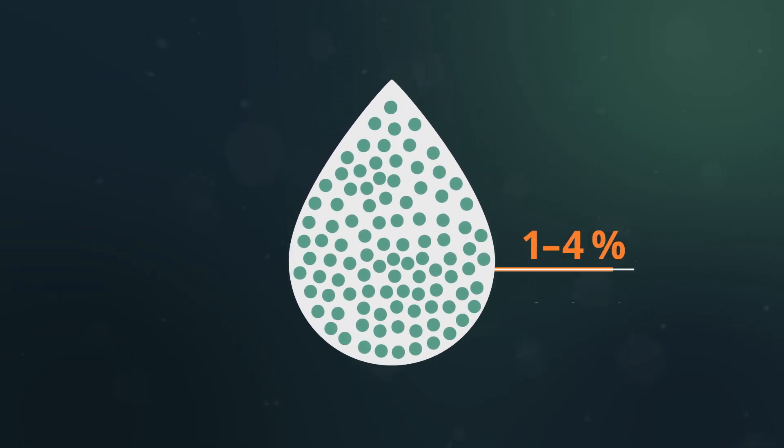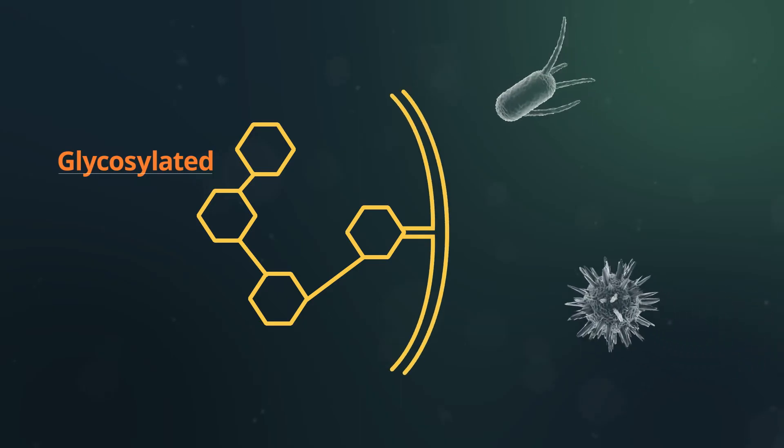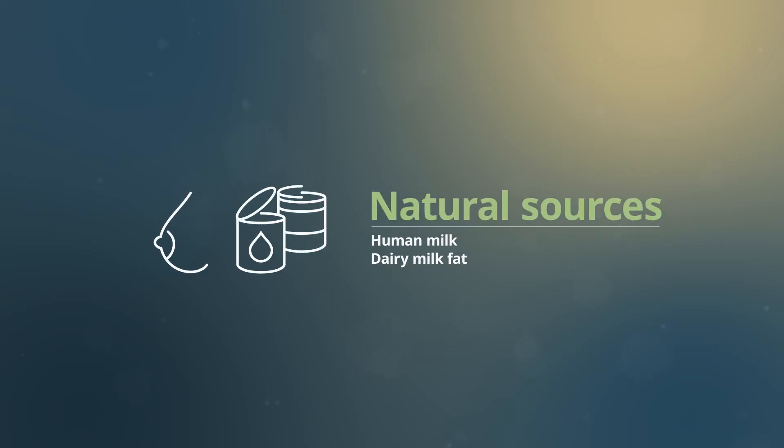MFGM protein, which contributes 1-4% of the total protein in milk, is mostly glycosylated and has been associated with protection from bacterial and viral infection.